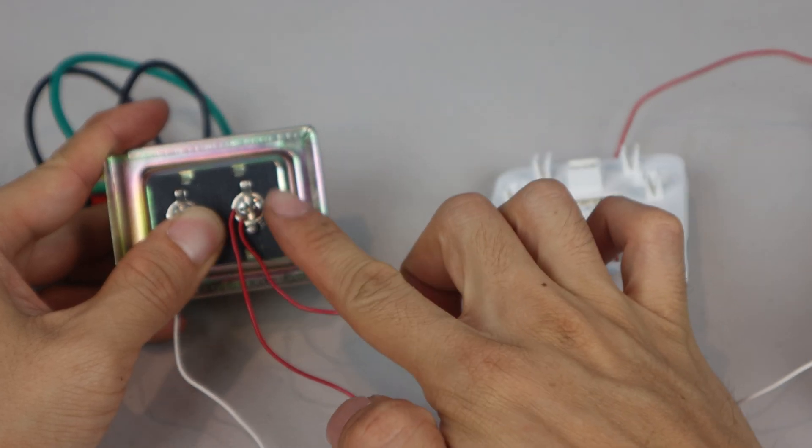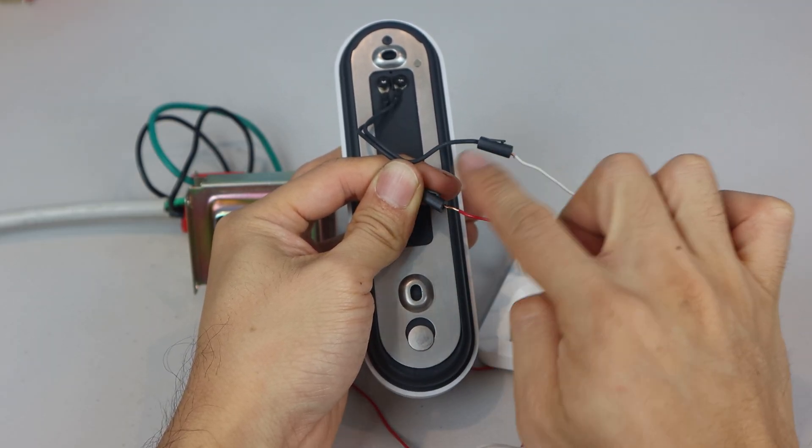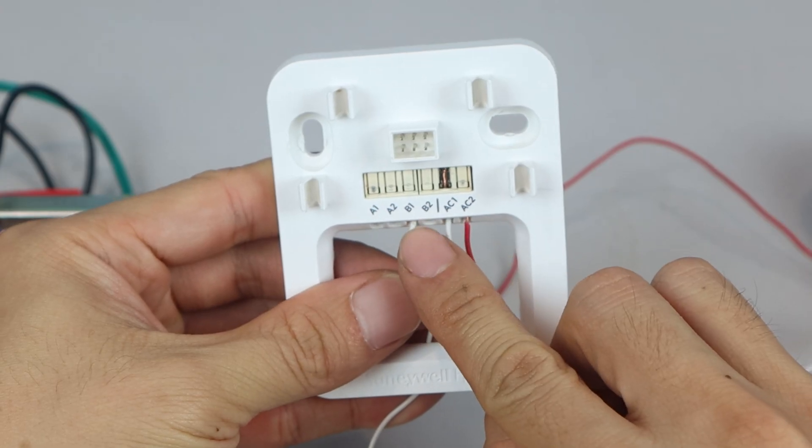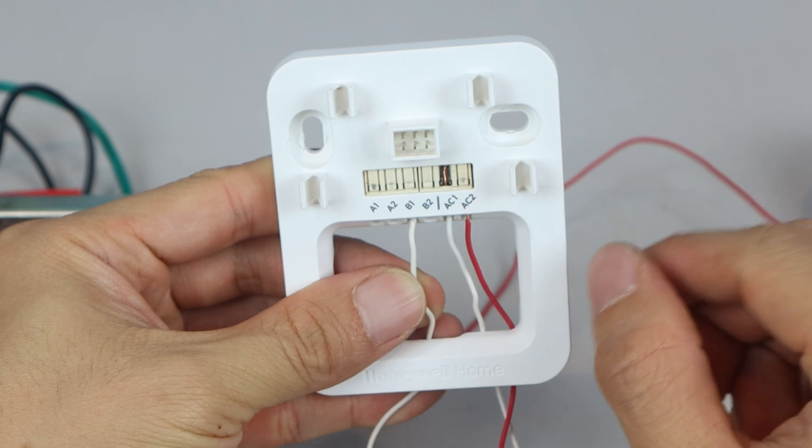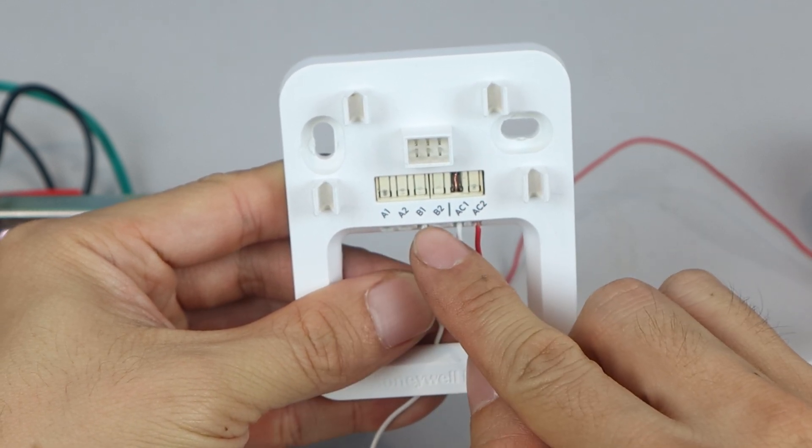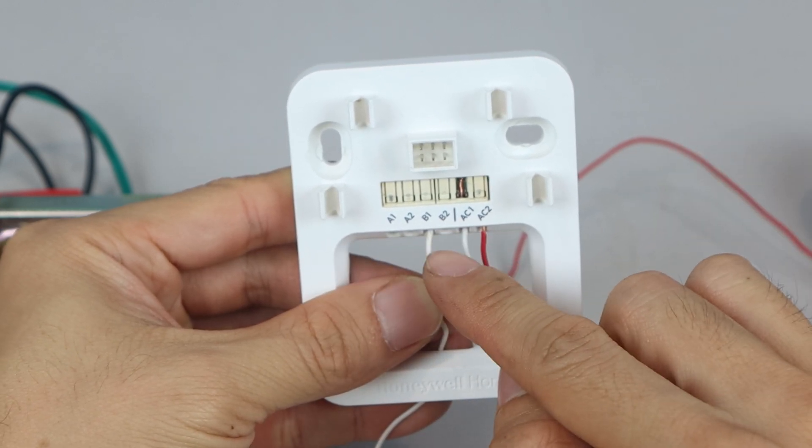The second red wire on the transformer goes to one of the leads on the doorbell camera. It doesn't matter which side it goes to. The second white wire on the doorbell goes to the B1 terminal. And again, if you have a fully functioning panel, you should be able to use A1 or B1. Or if you have two doorbells, one would use A1 and the other B1.